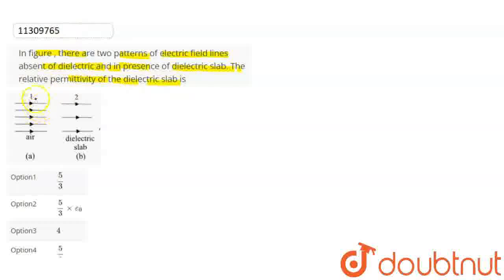The electric field line is more where field lines are dense. Where the electric field line density increases, the electric field value is more. Where the electric field line is less, the electric field value is less. The electric field is related to field line density.